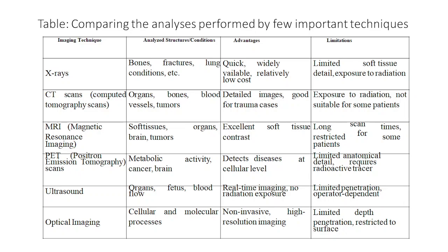CT scan means computed tomography scan. It is used for visualizing and taking images of organs like brain, lung, bones, blood vessels, and tumors. Advantages include detailed imaging and it is good for trauma and emergency cases. Limitations include exposure to radiation and not being suitable for some patients. MRI is also used for soft tissues, organs, brain, and tumors and provides excellent soft tissue contrast not achievable by other imaging techniques, though it has long scan times and restrictions for some patients.